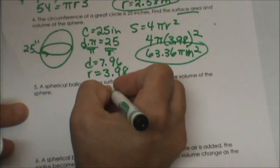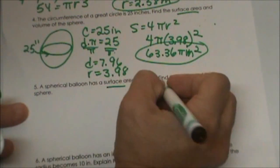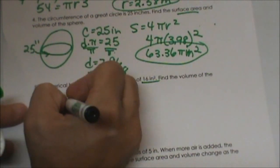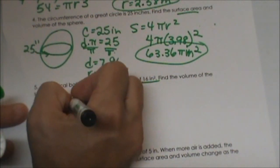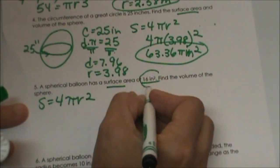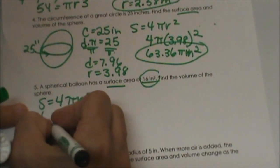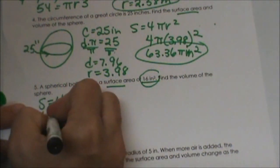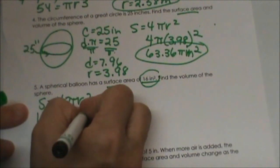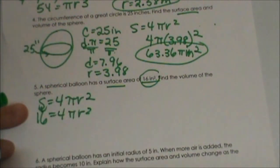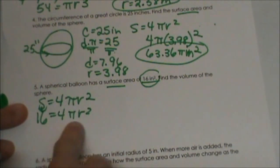We are given surface area, so let's write down our formula. The surface area equals 4πr². We know that surface area is 16, so I am going to plug in 16 right here and bring the rest down. So all I did was plug in my surface area.